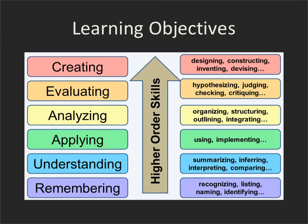Another way of looking at this is from Bloom's taxonomy of learning objectives — you may or may not be familiar with it. The basic concept is that the lower order skills are those such as understanding and remembering, and this tends to be what we deliver when we have a didactic lecture, because they're not applying the information. The higher order skills — creating, evaluating, analyzing, and applying — are where we want our learners to be.